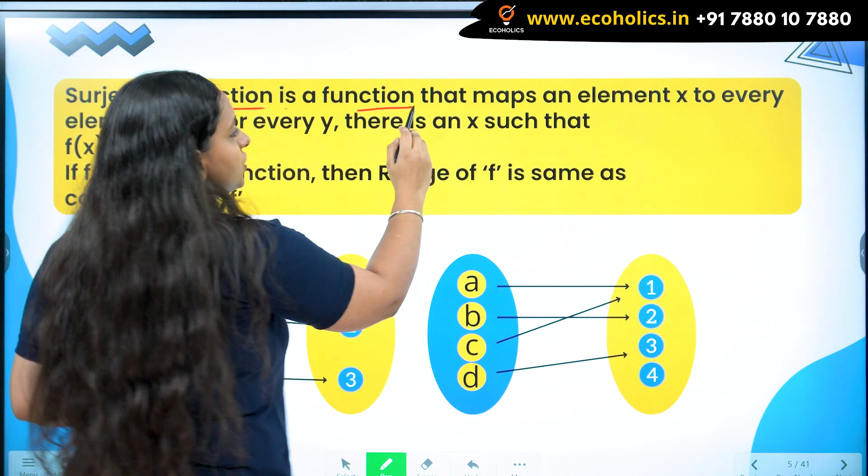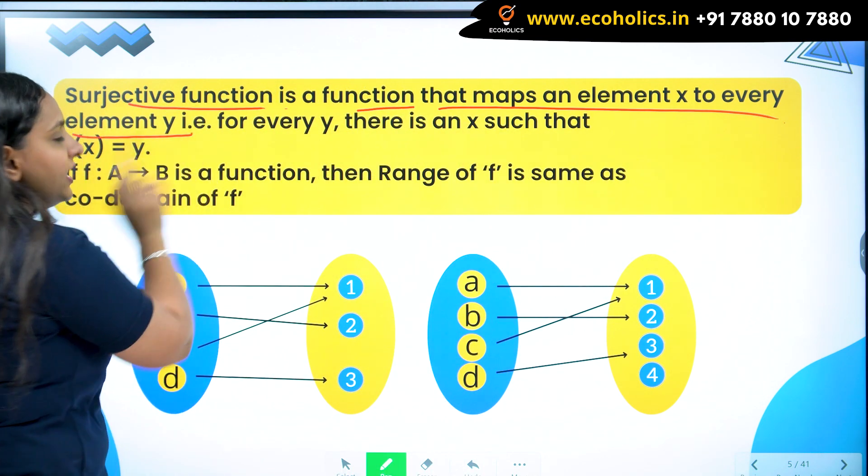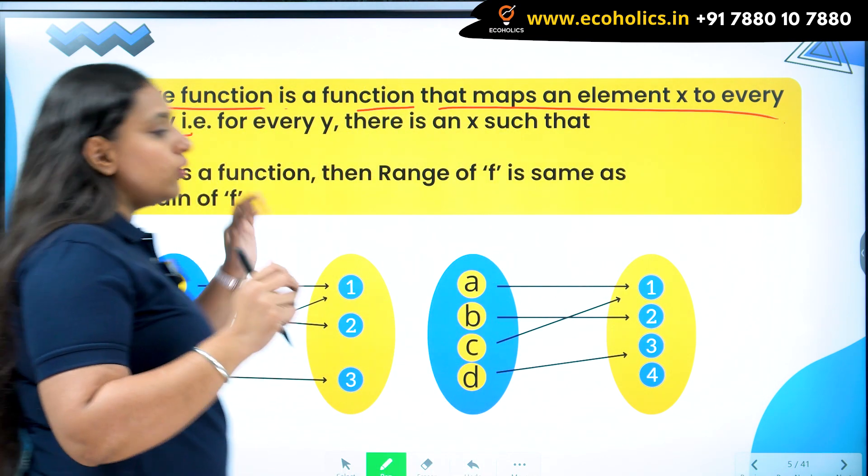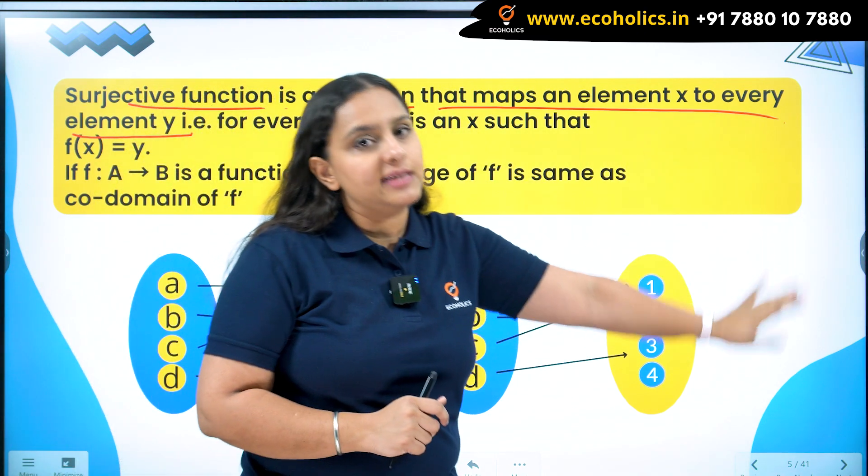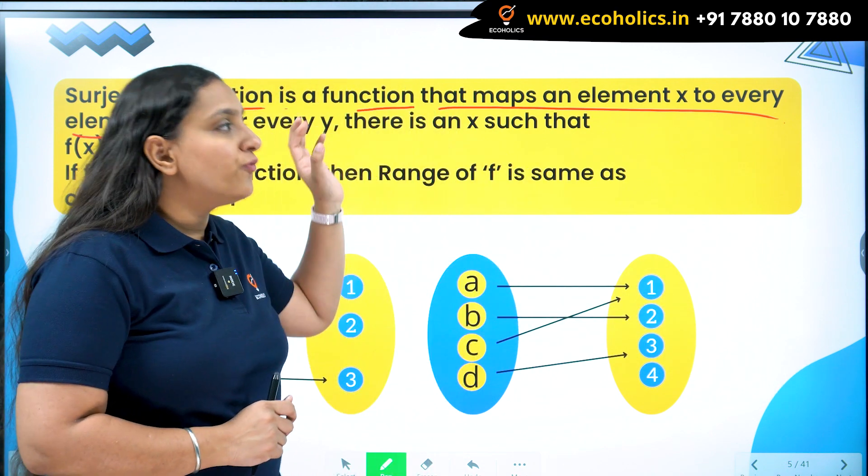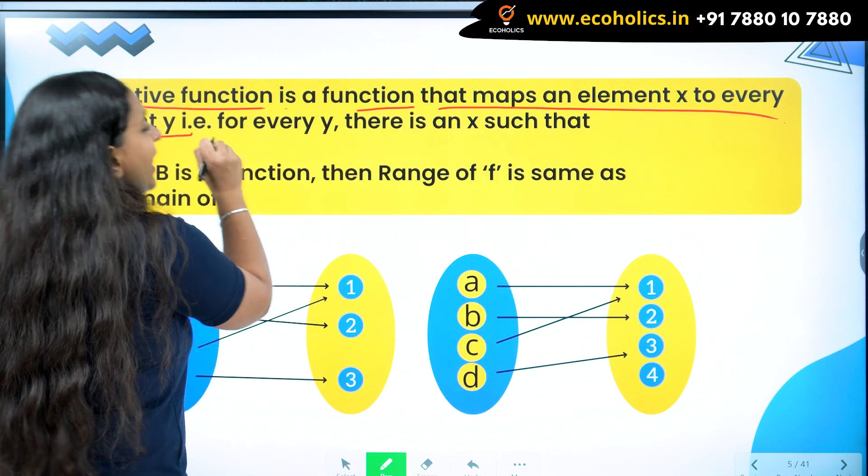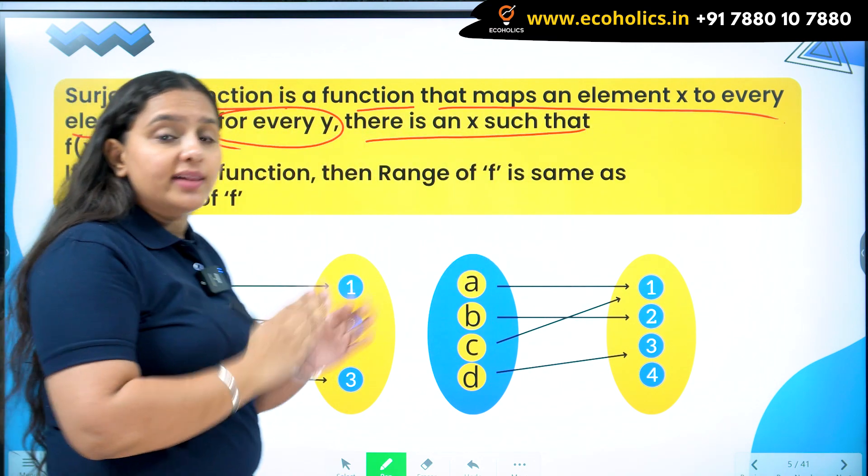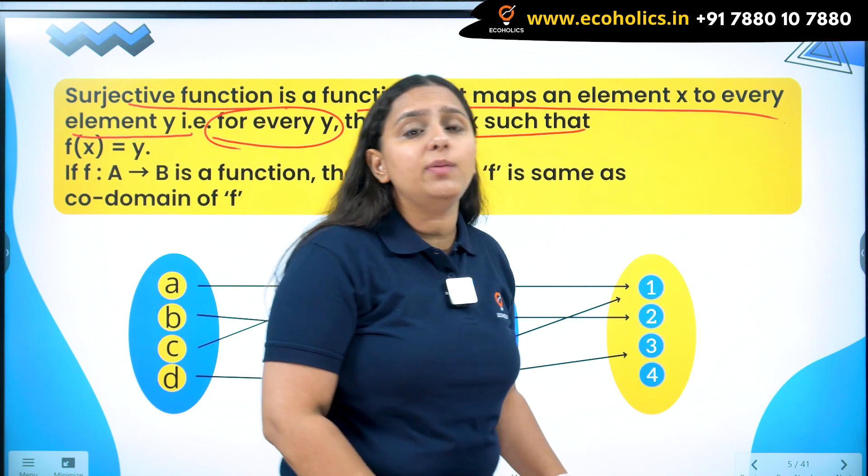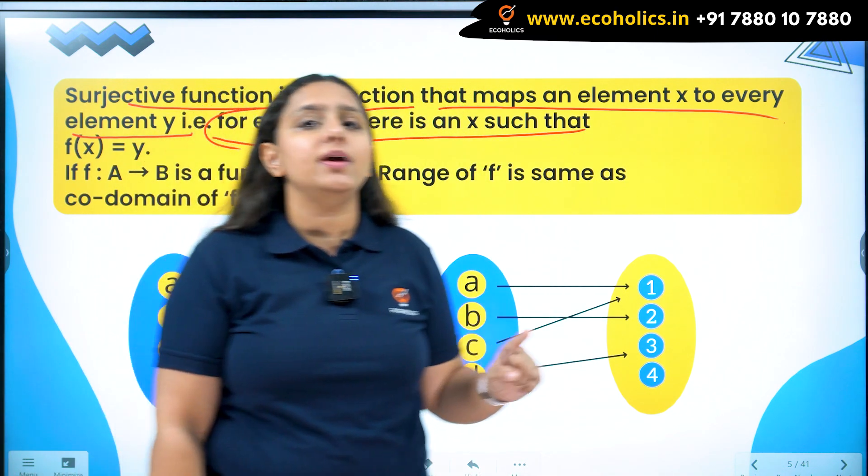Surjective function is a function that maps an element x to every element y. Mapping goes from domain to range. So x is the element of domain, y is the element of range. The function is mapping from x to y such that for every y there is an x.